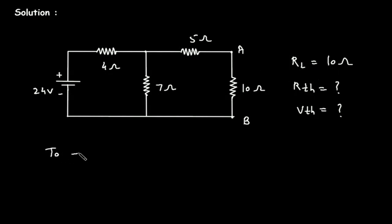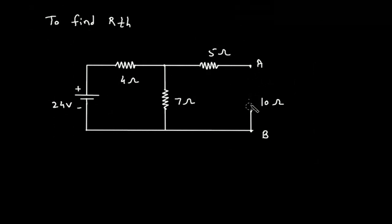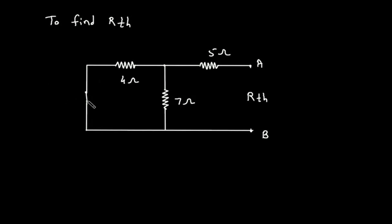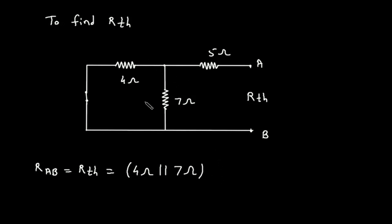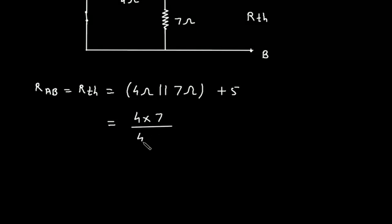First we will find RTH. To find RTH, we have to turn off this source, so this voltage source will be replaced by its internal resistance and it will be short circuited. From this, RTH — that is Rab — is equal to: here we can see this 4 ohm is in parallel with 7 ohm, so 4 ohm parallel with 7 ohm, then it is in series with this 5 ohm, so plus 5.